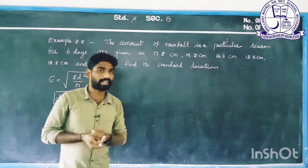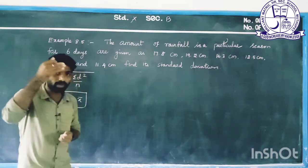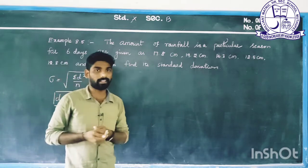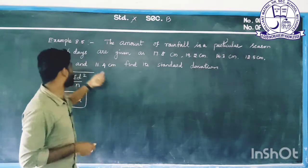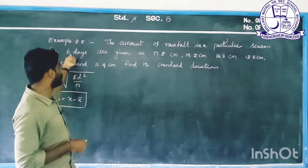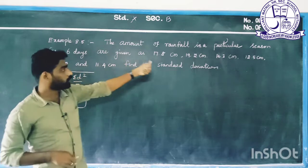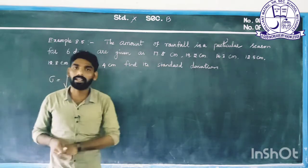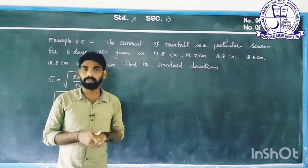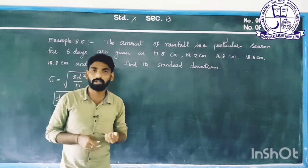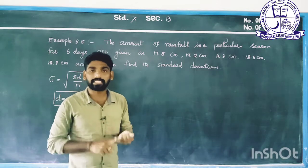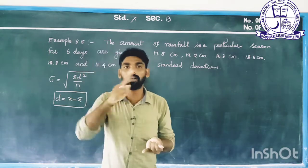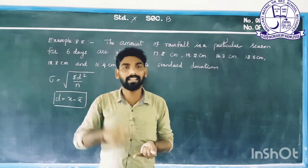We set up the table with columns for x, d, and d squared. We add all d squared values. Here, n equals 6 days, so n is equal to 6.